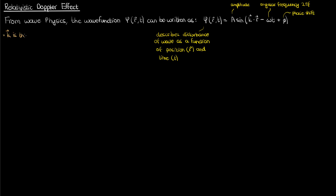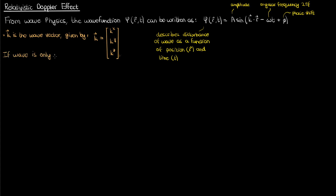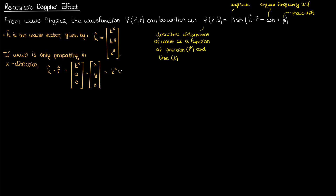The vector k being dotted with r is called the wave vector. The wave vector tells you the direction in which the individual waves in psi are traveling. It has three elements: one in the x direction, one in the y direction, and one in the z direction — where the superscripts represent an index and not a power. So for example, if my wave were only propagating in the x direction, my wave vector would only have the k-superscript-x component; the other components would be zero. If I dot that with my position vector r given by x, y, and z, I just get k-superscript-x times x.